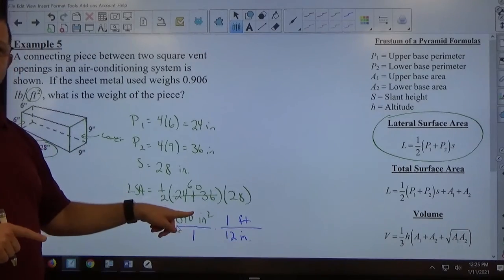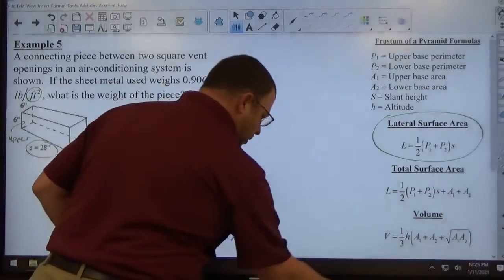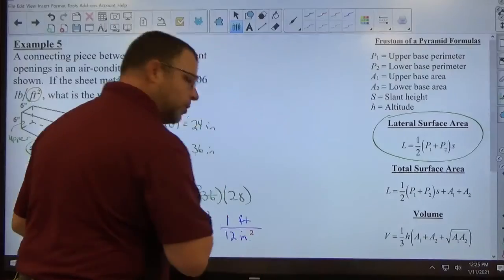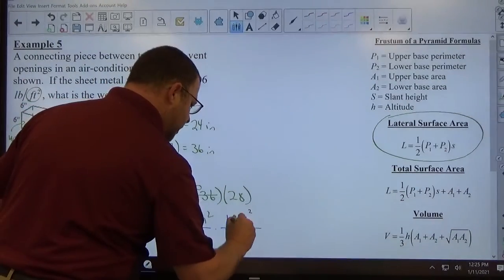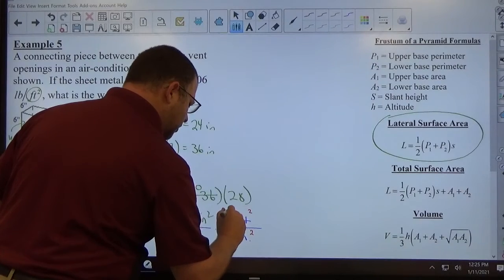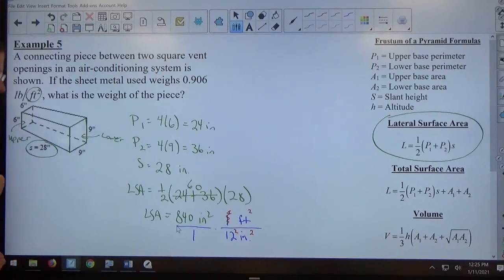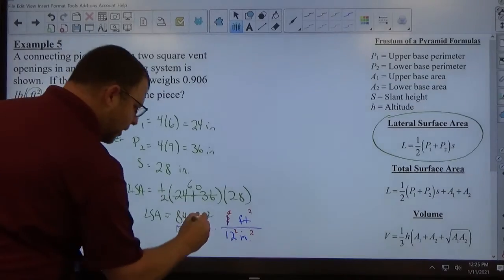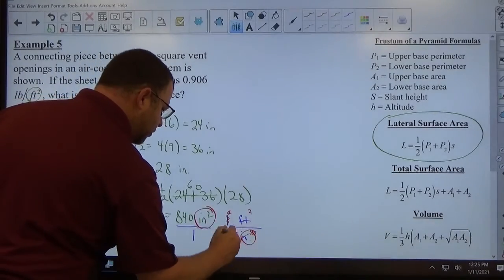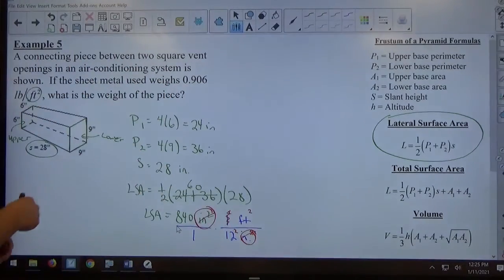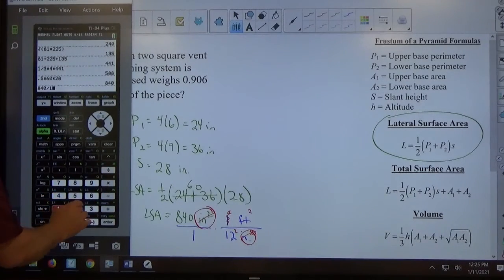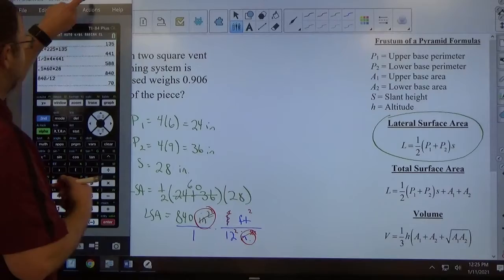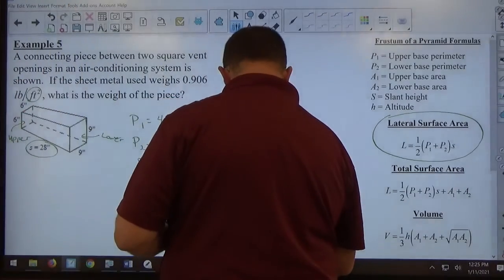This is inches, this is square inches. So if I need this to be square inches, we need to square everything. So it's going to be feet squared, 12 squared. Everything is squared there. Inches squared cancels inches squared. We're converting to feet squared. 840 divided by 144 equals, so that's a total of 70 square feet